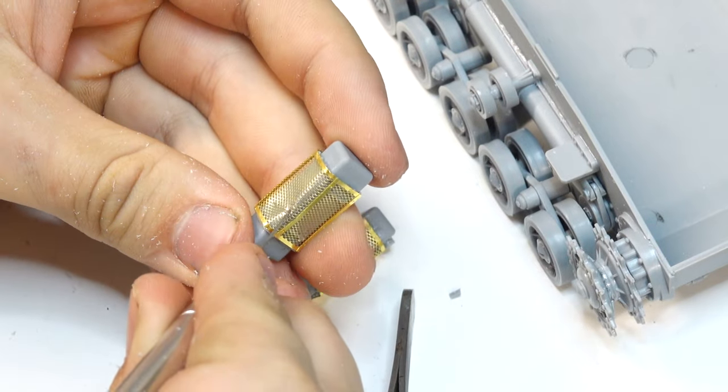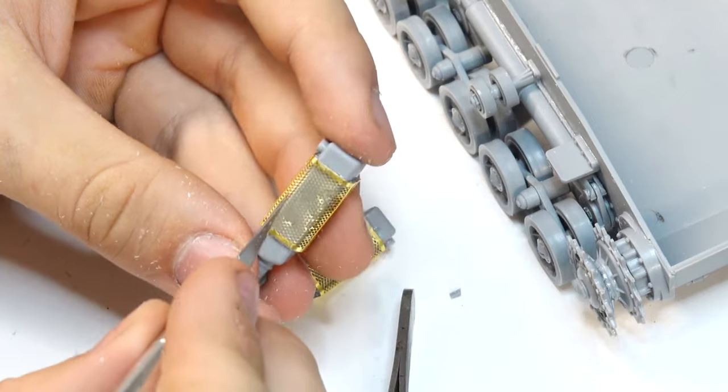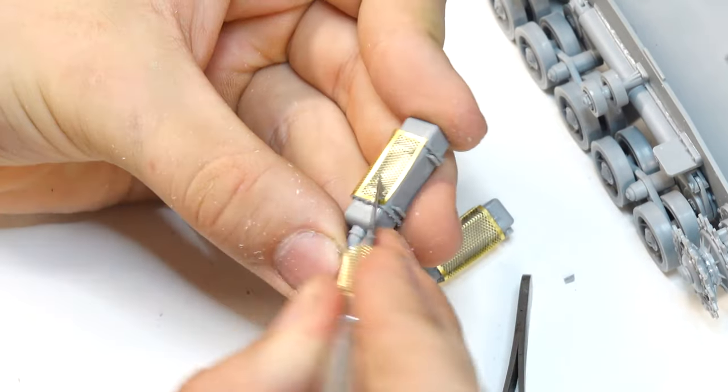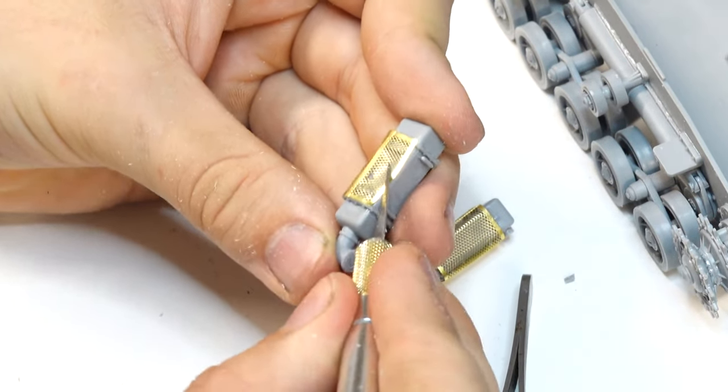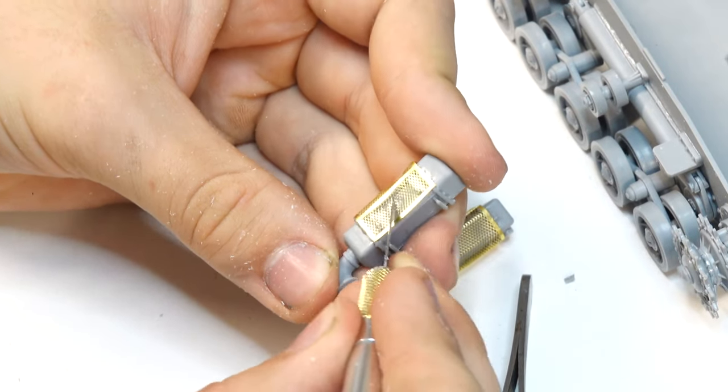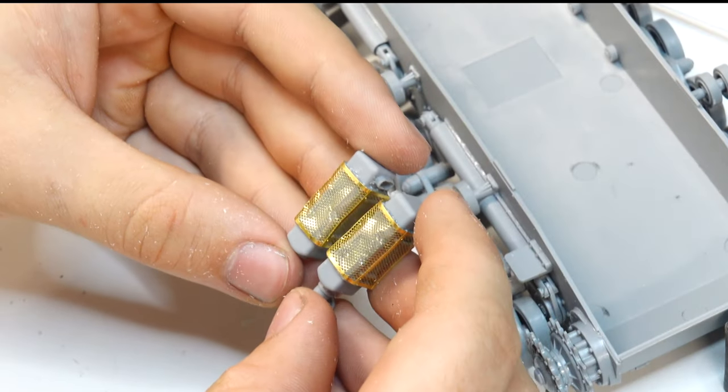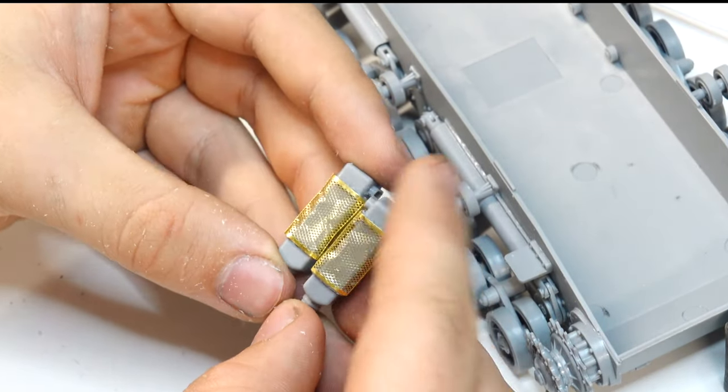Since I intend on weathering this thing pretty heavily, I just poke and slash with an X-Acto blade to add some wear to the grate. The main thing you should keep in mind when doing this kind of damage is to make sure to keep the cuts and holes random so it doesn't look consistent, because then it will look pretty unnatural.